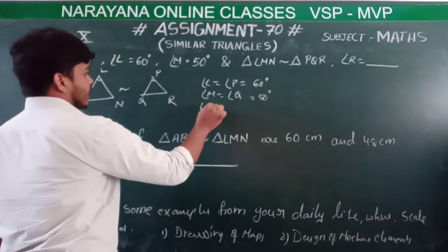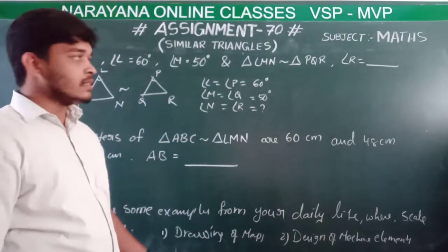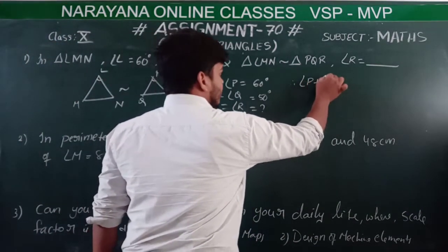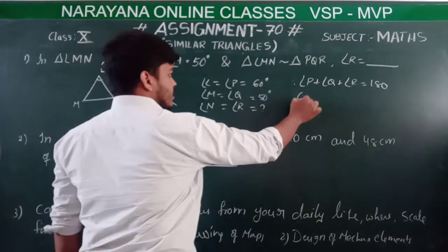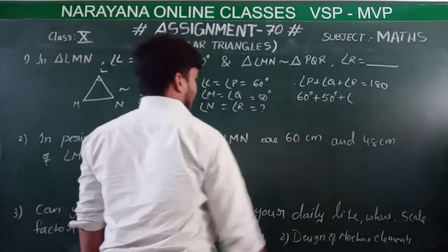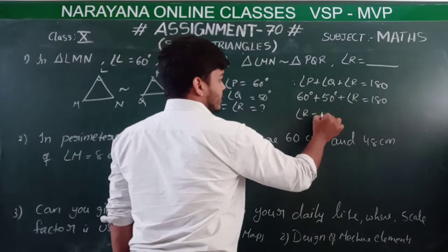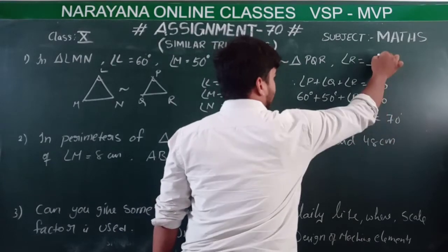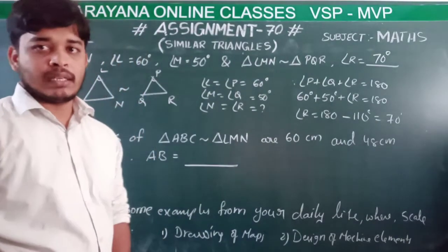We need to calculate angle R. We know that the sum of interior angles of a triangle is 180 degrees. So, angle P plus angle Q plus angle R equals 180. That is 60 plus 50 plus angle R equals 180, so angle R equals 180 minus 110, which is 70 degrees.